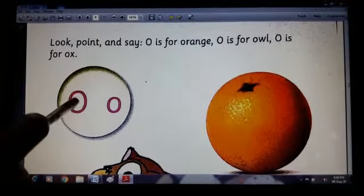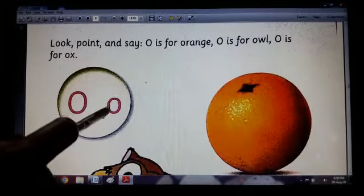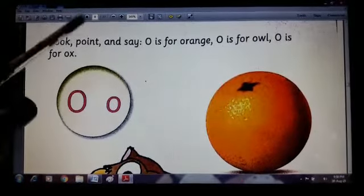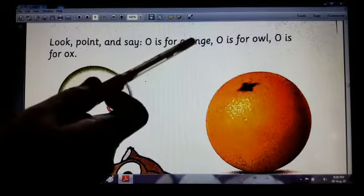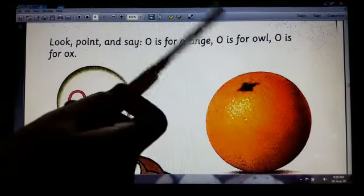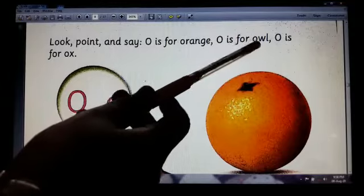O. This is capital letter O and this is small letter O. This is our revision class. Now look, point and say: O is for orange, O-R-A-N-G-E orange. O is for owl, O-W-L owl.